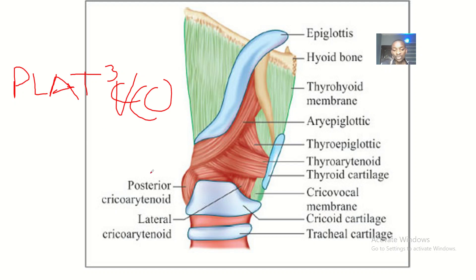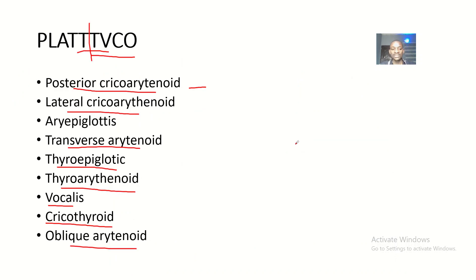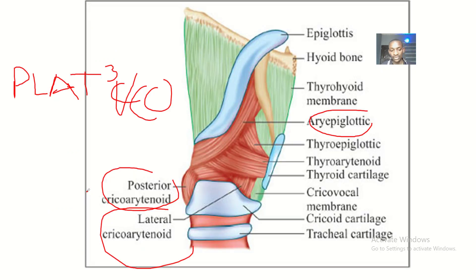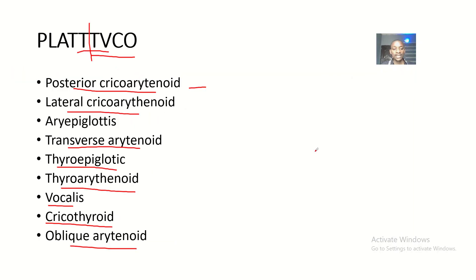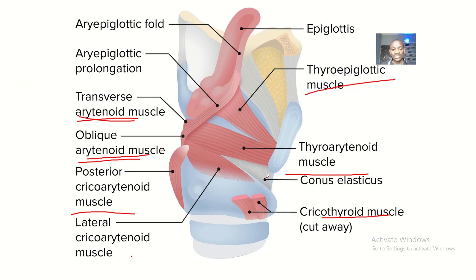So in PLAT VICO: P is Posterior Cricoarytenoid, L is Lateral Cricoarytenoid, A is Aryepiglottic. The T's — Transverse Arytenoid, Thyroepiglottic, and Thyroarytenoid — are not shown in this image. V for Vocalis is also not shown here. This image is not the comprehensive one; a more comprehensive image would show all of them.